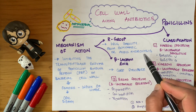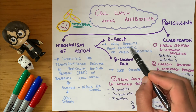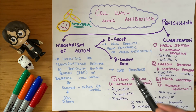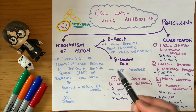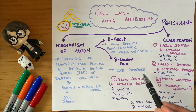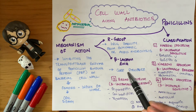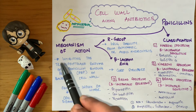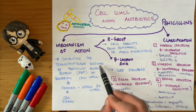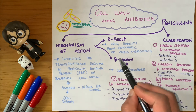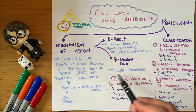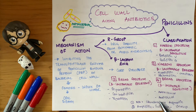The R group becomes bulky and fights the acidic hydrolysis, keeping the drug active. The main component, the beta-lactam ring, is the core of the structure — it fights against the bacteria by inhibiting the transpeptidase enzyme. So the R group is the protective measure, and the beta-lactam ring is the functioning measure.